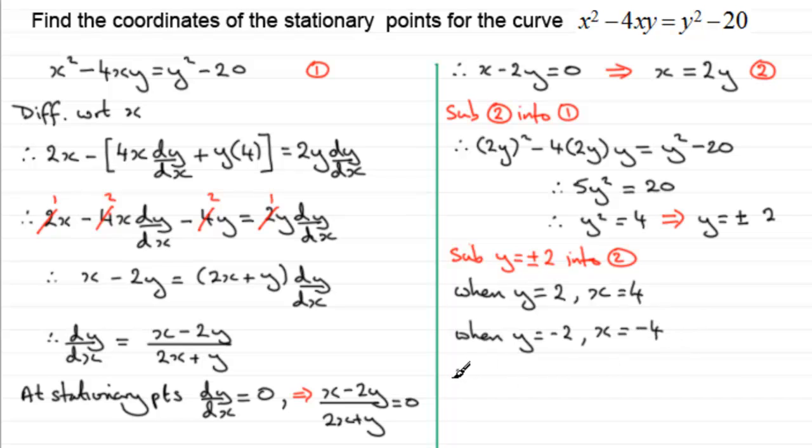So in summary, then, we've therefore got stationary points at, and those coordinates are going to be at, when x is 4, y is 2, so stationary point at 4, 2. And you've got another stationary point at minus 4, and minus 2, two stationary points, then.